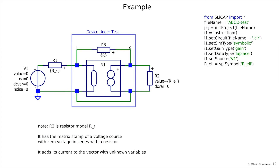Let's see what we need for SLiCAP. You import everything, give it the file name — this is the file 'abcd_test' that I gave to it. You initialize the project because that creates the directory structure and sets all the initial HTML directives so you can add something to a page. Then you define the instruction, check the circuit by setting and checking it, and then we are going to do symbolic analysis — so we set the simulation type to symbolic.